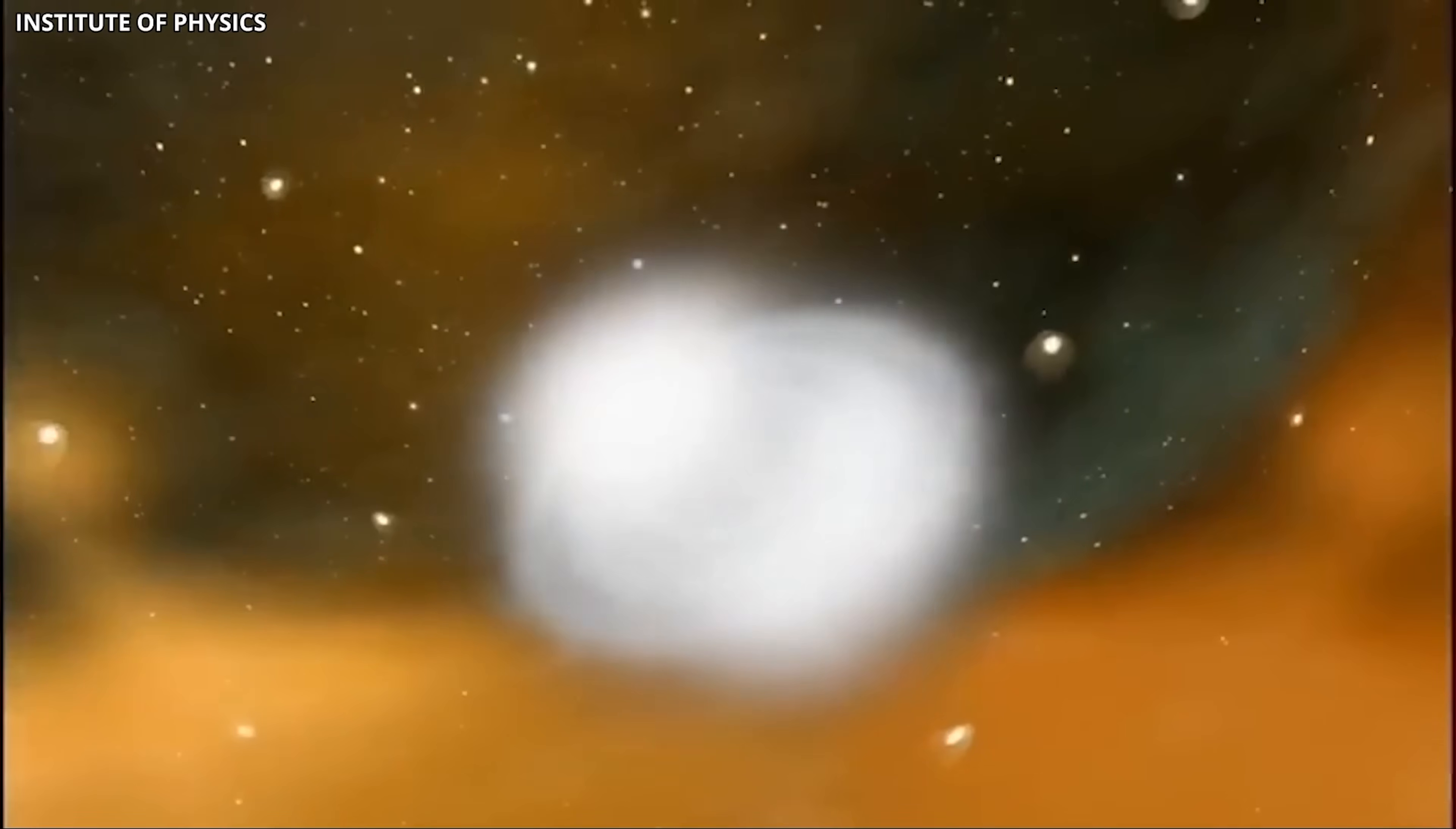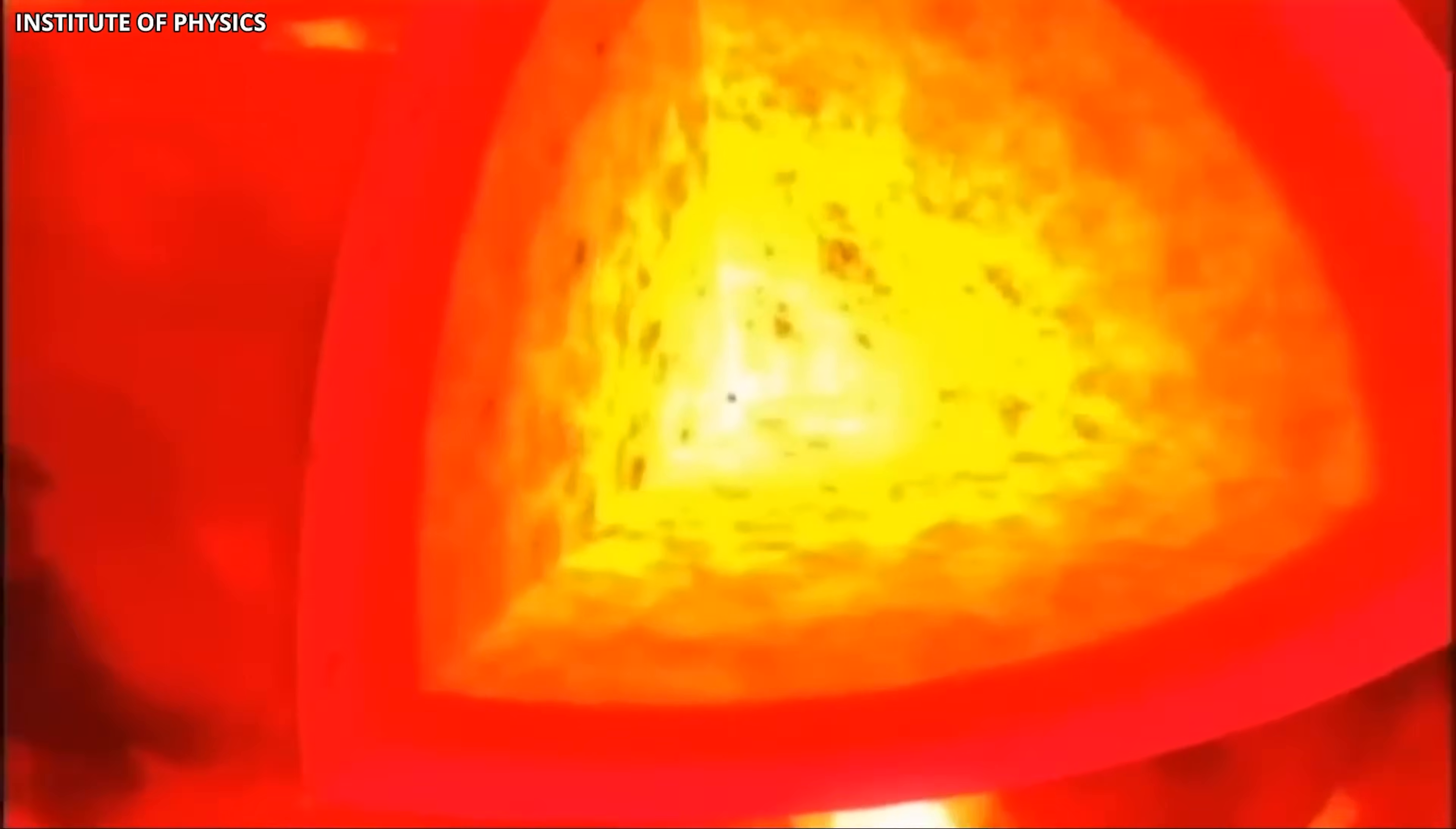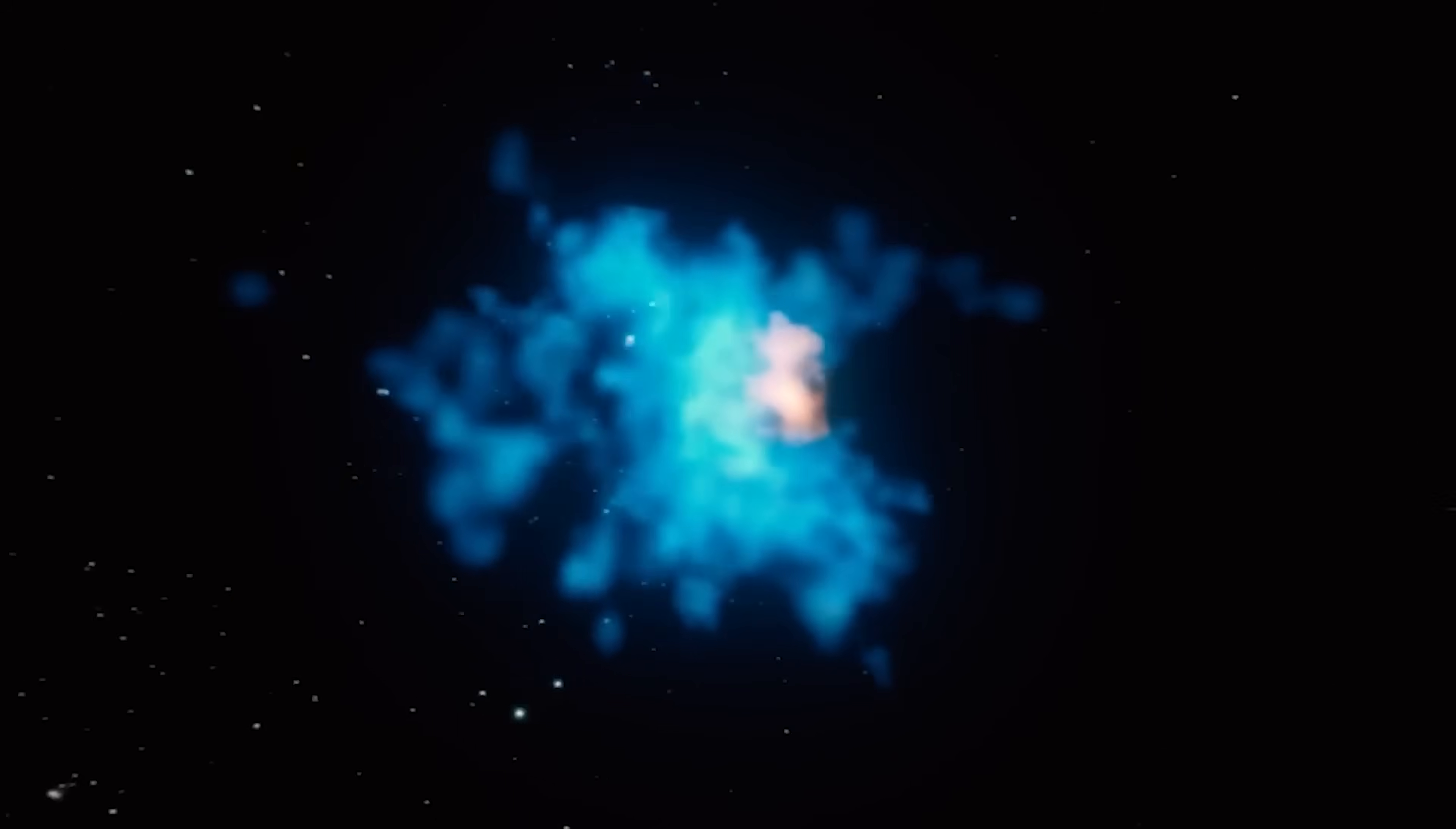To produce oxygen, you need massive stars to form, burn through their fuel, explode as supernovae, and seed the region with new material that then forms additional stars. That's a process that should take hundreds of millions of years. But these galaxies were already doing it when the universe was barely old enough to know what structure meant. If the timeline felt tight before, now it felt impossibly compressed.